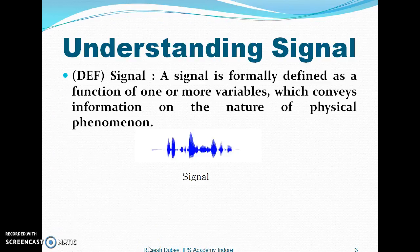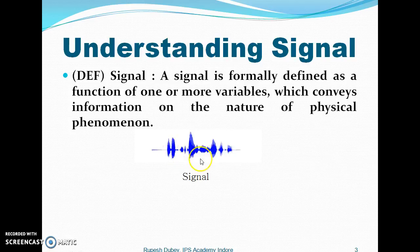A signal is defined as a function of one or more variables which conveys information on the nature of physical phenomena. For instance, if we look at this particular signal, it has an x-axis and a y-axis. The x-axis represents amplitude and the y-axis represents time. So with respect to time, these amplitudes are available.